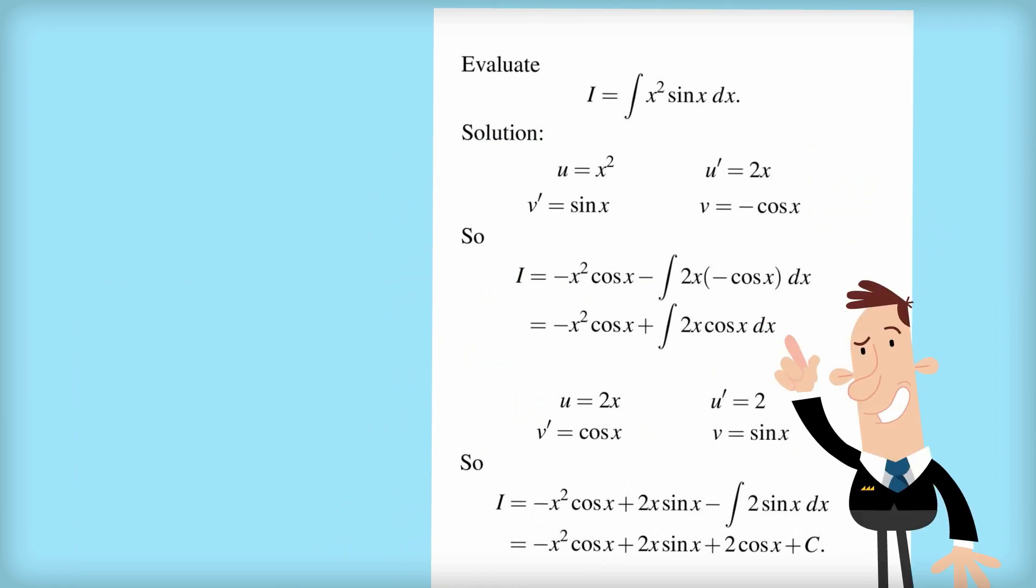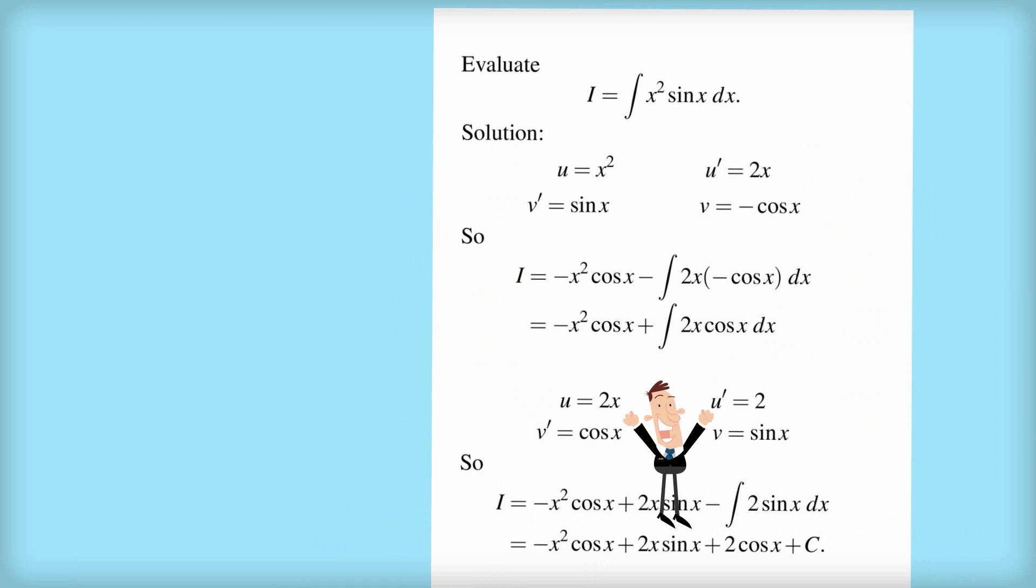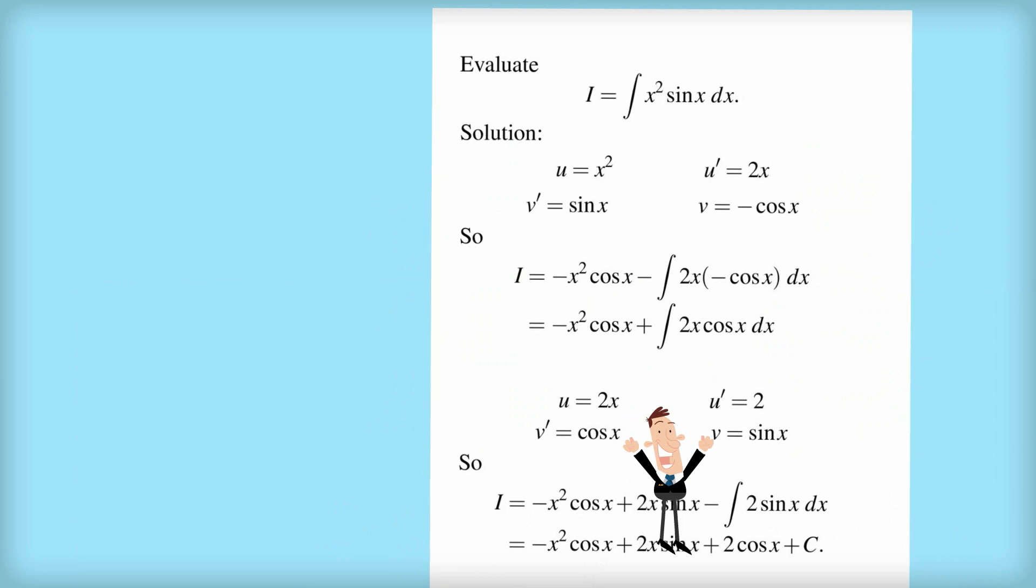And now we look at this integral of 2x cos x dx, and we say, ah, that's a classic for integration by parts, so we're going to integrate by parts a second time. So here we let u equal 2x, and we take the derivative of that, we get u dash equals 2. That means that the other part of the integrand, cos x, we'll label that as v dash, the derivative of v, which means that v equals sine of x over here.